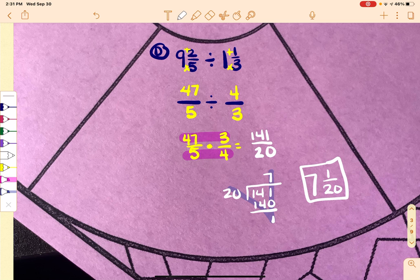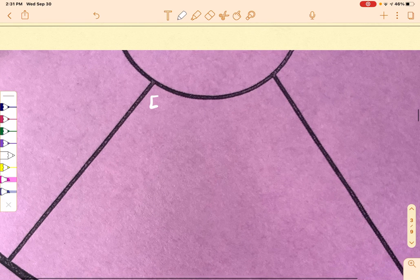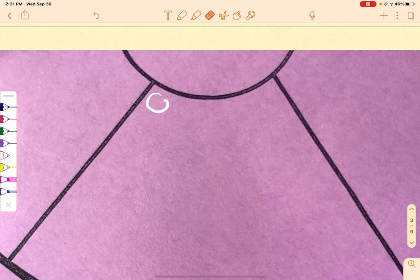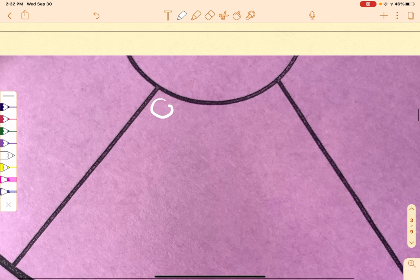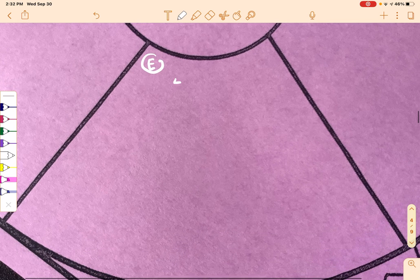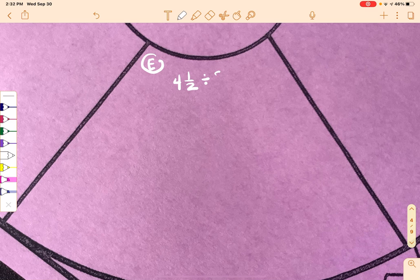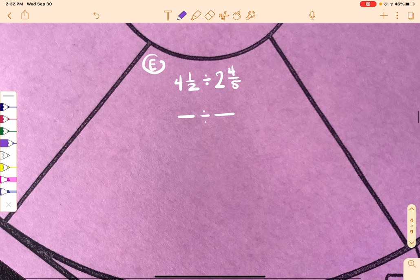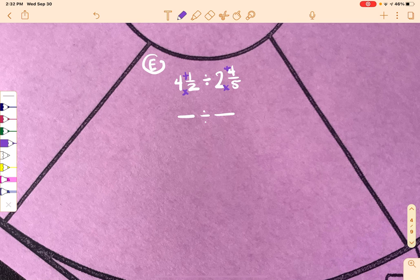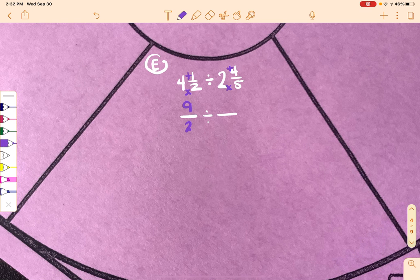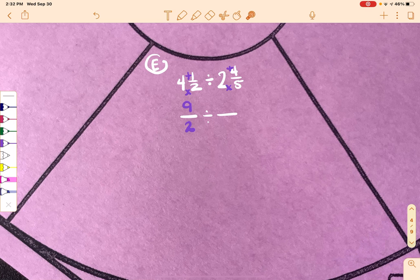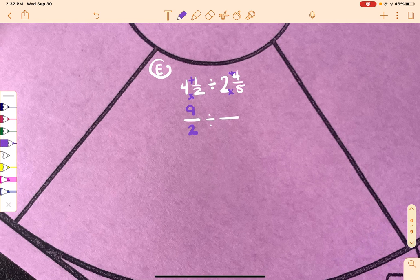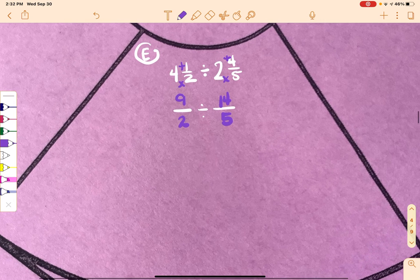Okay, I want to look at one more and we're going to call it good for today. So here is E. So 4 and a half divided by 2 and 4 fifths. So remember, we want to have our fraction divided by a fraction and this isn't set up that way. So I'm going to have to go in and do my multiplying and adding. So 2 times 4 is 8 plus 1 is 9 so 9 over 2. To do the second one, 5 times 2 is 10 plus the 4 is 14. So 14 over 5.